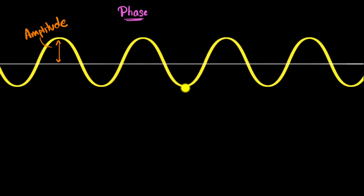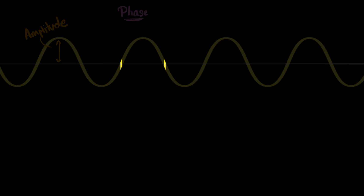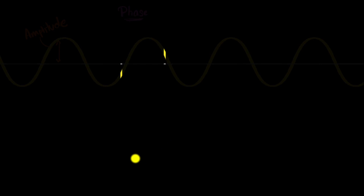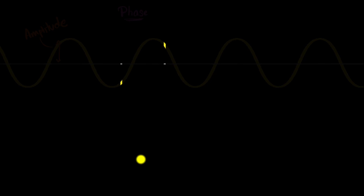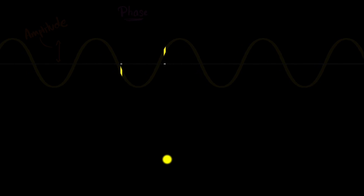Any two points on the peaks are in phase; any two points on the valleys are in phase with each other. But what about these two points — are they in phase? Let's concentrate on them, move the wave, and see what happens. When one is going up, the other is going down.